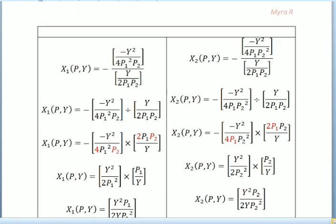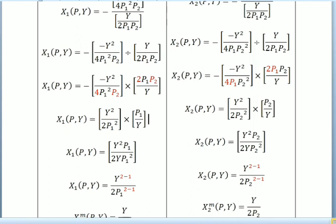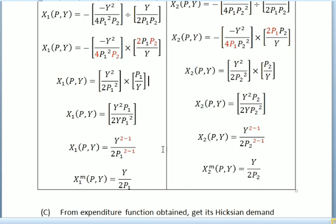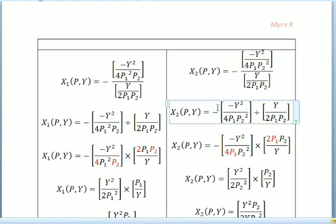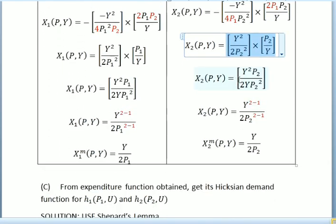Continuing: negative times negative gives positive, y² times 1/y gives y, and p1 terms simplify (2p1²·p1^(−1) = 2p1). So we get x1 Marshallian equal to y over 2p1. For x2, we repeat the same calculation using ∂V/∂p2, and we get x2 Marshallian equal to y over 2p2.